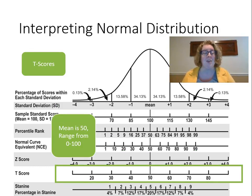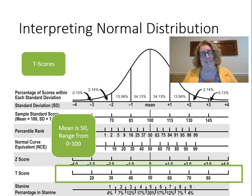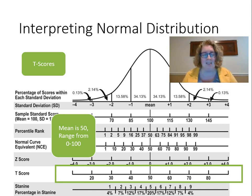Instead, we use what we call T-scores. T-scores are the same as z-scores except they range from zero to 100 and the mean is 50. So a T-score of 60 would be the same as a z-score of one. A T-score of 80 is a z-score of three — three standard deviations above the mean. It's a little confusing when you get to percentile ranks because that also ranges from zero to 100, but the scale is really different. A T-score is basically the same as a standard deviation unit, just converted so it sounds better to parents.